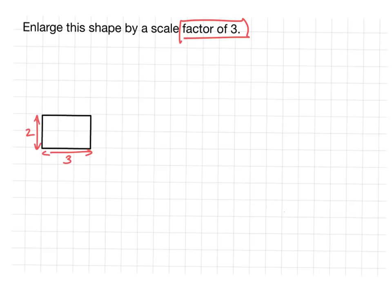All you have to do in enlargements is just multiply each of the dimensions by the scale factor. So if the base of this rectangle is 3, the enlarged shape will have a base which is 3 times the length, because we are multiplying by the scale factor. So what's 3 times 3? It's 9. So the new shape will have a base of 9.